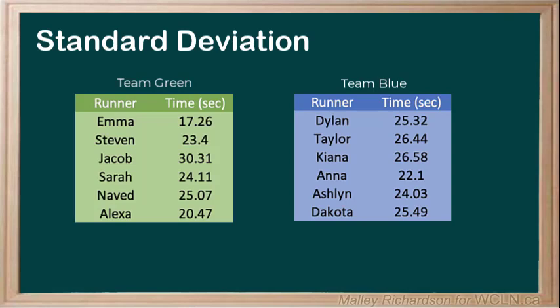Now looking at the blue team, Dylan ran the race in 25.32 seconds, Taylor in 26.44 seconds, Kiana in 26.58 seconds, Anna in 22.1 seconds, Ashlyn with 24.03 seconds, and finally Dakota finished the race in 25.49 seconds.